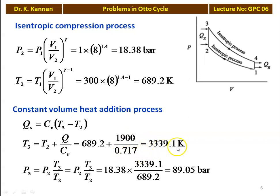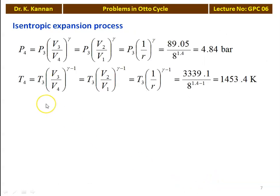This gives T3 equals 3339.1 Kelvin and P3 equals P2 × T3/T2 equals 18.38 × 3339.1 / 689.2 equals 89.05 bar. For the isentropic expansion process 3 to 4, P4 equals P3 × (V3/V4)^gamma equals P3 × (V2/V1)^gamma equals P3 × (1/R)^gamma. So 89.05 / 8^1.4 equals 4.84 bar.